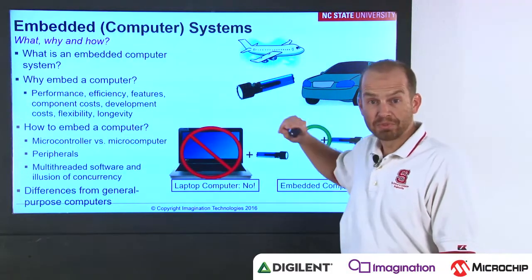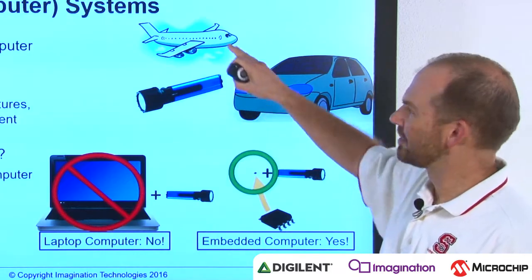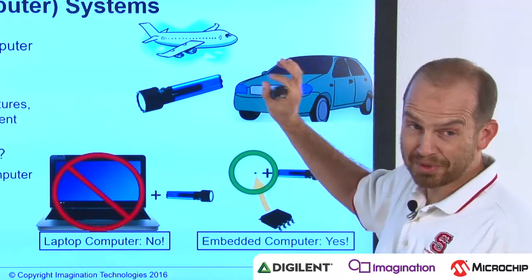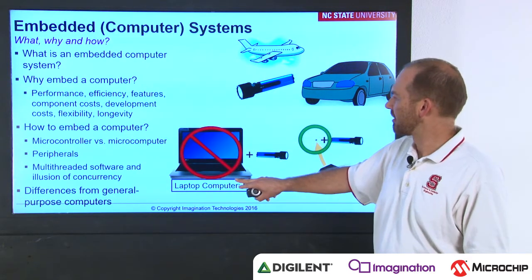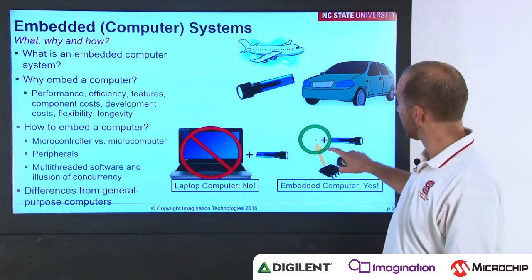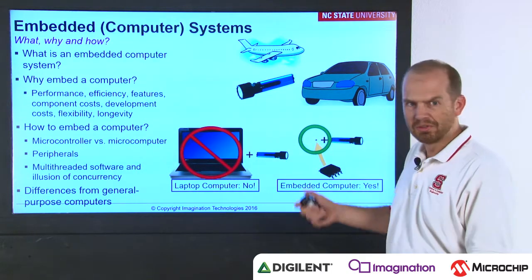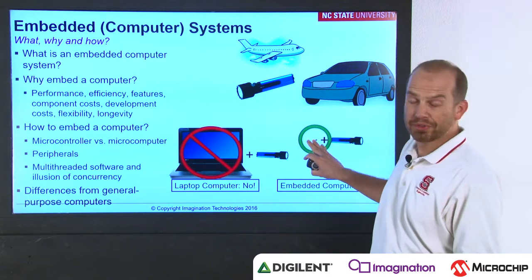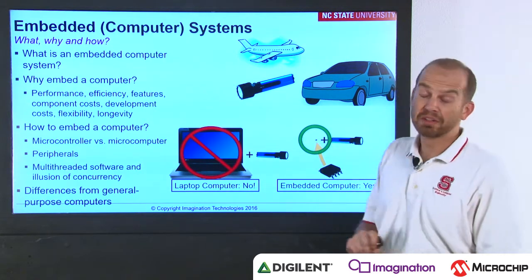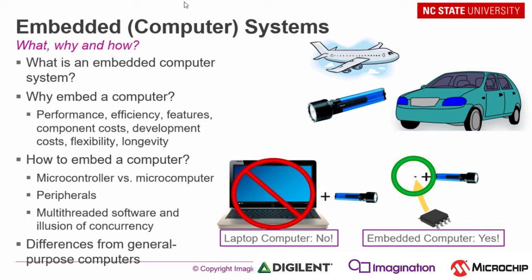We start off looking at embedded systems which have computers embedded in them to monitor and control them. We look at reasons for why we might embed a computer. Flashlights, cars, airplanes all may have computers in them to improve performance and get better features. We look at how to embed a computer — not a laptop, but a very small chip which is still a computer — and using that to monitor and control the device. We look at the differences between these kinds of computers, the peripherals that come with embedded computers, and multi-threaded software which gives us the illusion of concurrency.